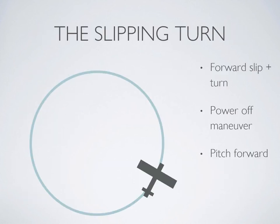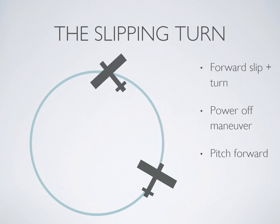Before we move on, the slipping turn is the same as a forward slip only it includes bank if required. Because the intent of the slipping turn is to lose altitude, this maneuver should be done with the power off, and you must pitch forward to overcome the increase in drag and maintain airspeed.